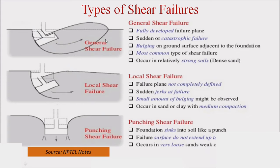Bulging on the ground surface is adjacent to the foundation. General shear failure is the most common type and also occurs in relatively strong soils. If the angle of shear resistance phi is greater than 36 degrees, this condition of shear failure occurs.